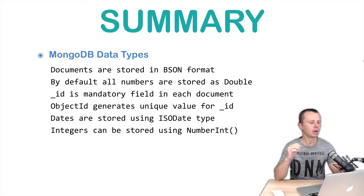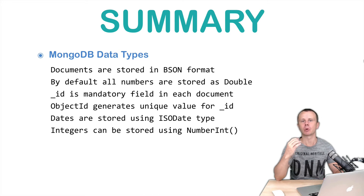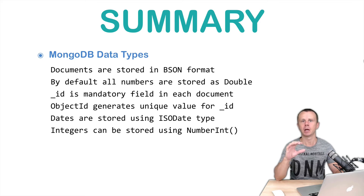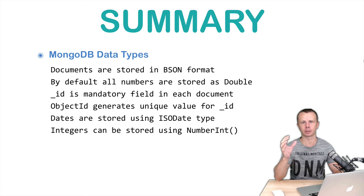ObjectID helps you generate this unique underscore ID value, and ObjectID consists of a timestamp, process ID, machine identifier, and counter.